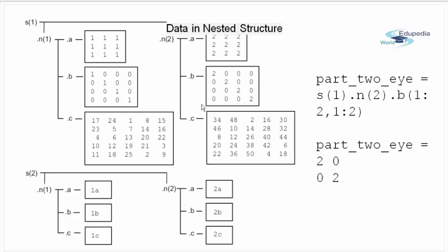As shown in the code at the right, I have accessed field B of the second element in the N within the first element of S. Our command looks something like S(1) that is the structure S, element 1 of structure S followed by dot notation, then N(2) that is the element 2 of structure N followed by dot notation by field name B with first two elements of column and rows which is nothing but the upper 2 by 2 version of field B.